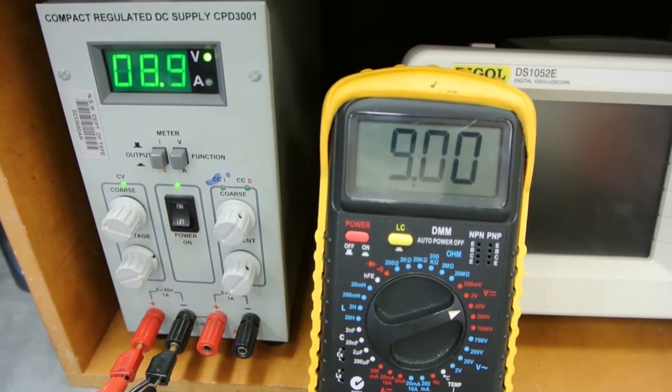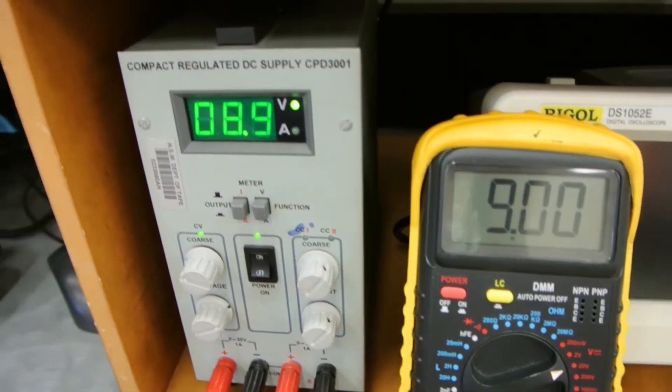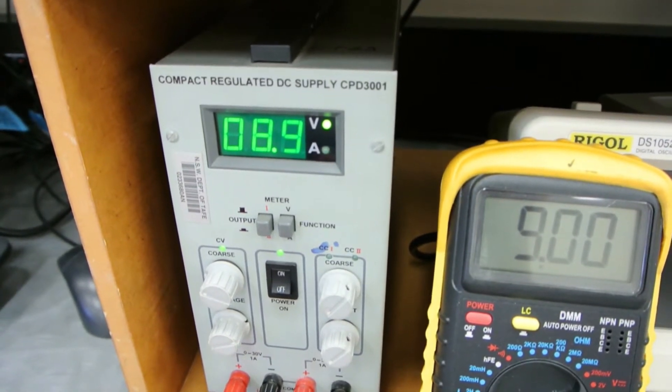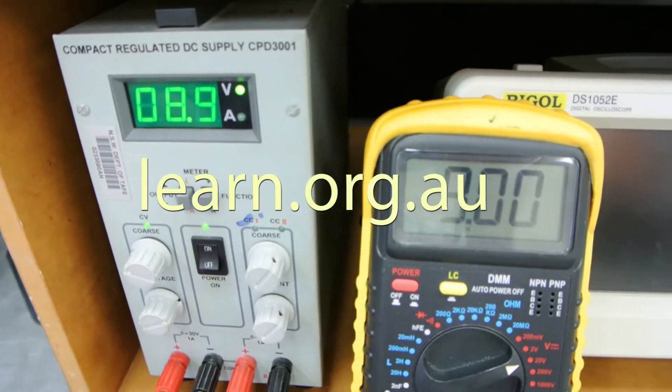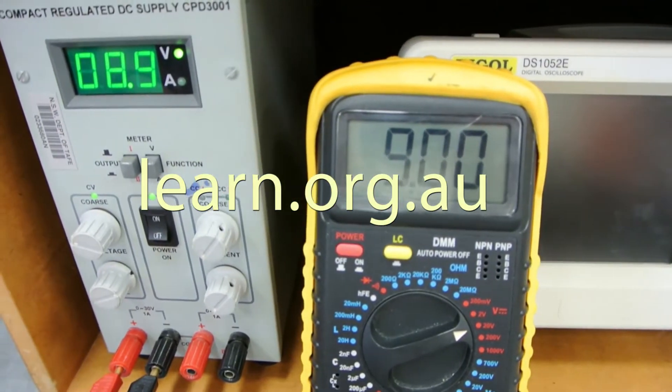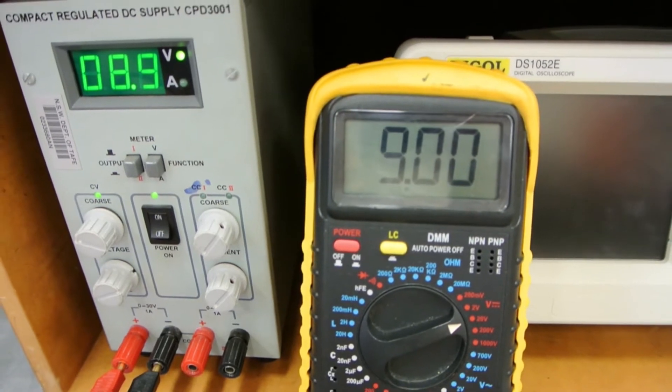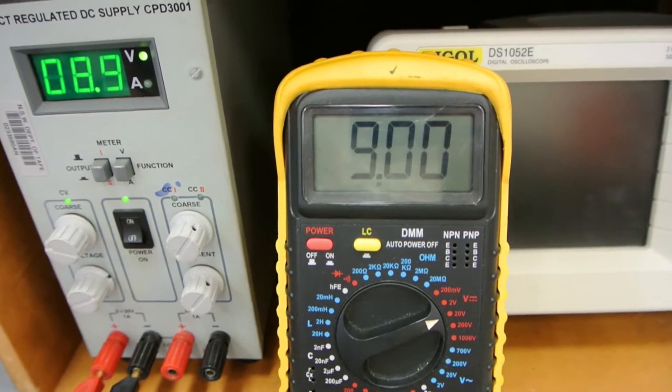I demonstrated this in the first video. Never rely on the power supply voltage indicator. It's not always accurate. You can see here it's saying 8.9 volts yet the DMM is telling me 9 volts. Because I'll be doing the resistor voltage measurements with the DMM, I'll set the voltage on the DMM to 9 volts.